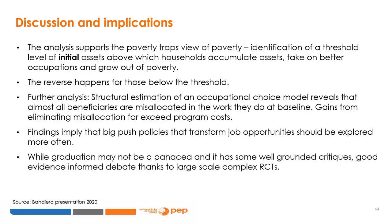The authors identified a threshold level of initial assets above which households could accumulate assets and had better occupations allowing them to escape poverty, while the reverse happened for those who stayed below the threshold. A structural estimation analysis showed that it is the misallocation of work for the ultra-poor that is to blame for their situation, and that the gains from reducing this misallocation far exceed the cost of the program. The findings imply that big push policies transforming job opportunities should be explored more often in developing countries.